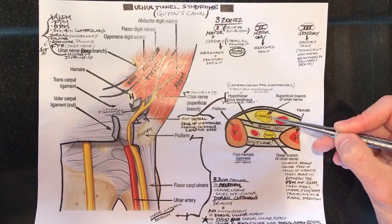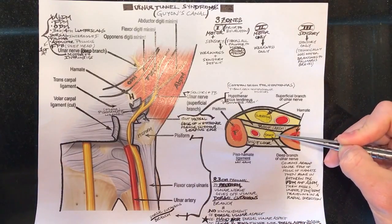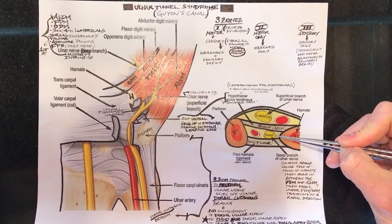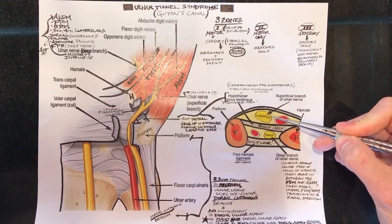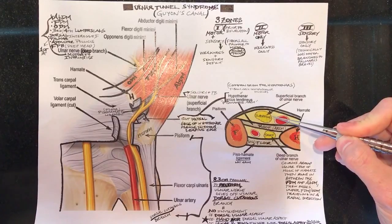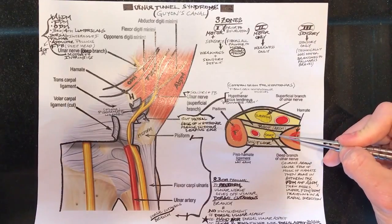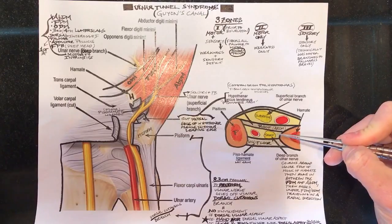The superficial branch is running obviously superficial to the deep branch so it makes a lot of sense why they name them different things and why superficial branch becomes sensory because that's going to the skin and the deep branch needs to go deep because that's going to go to the deeper musculature.